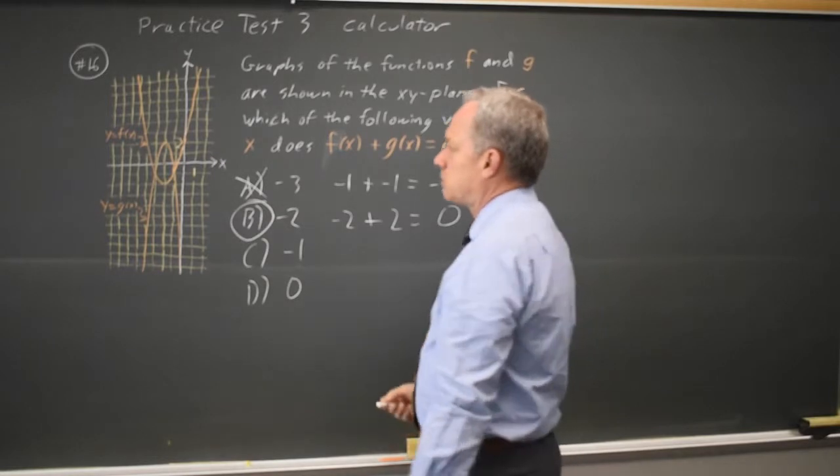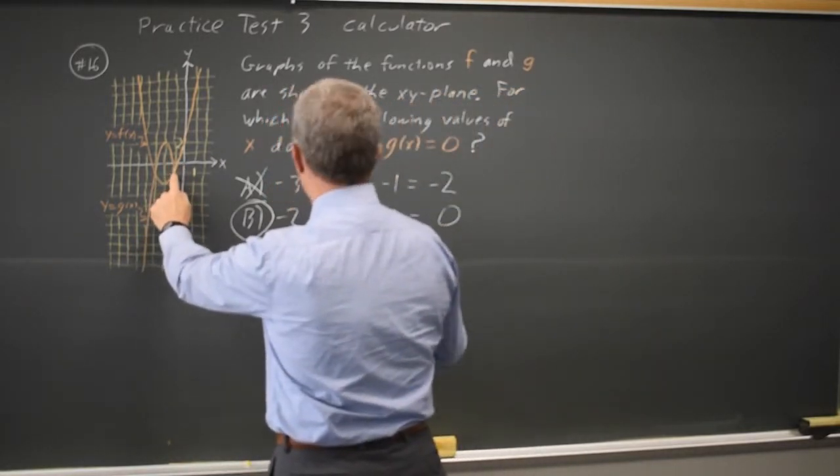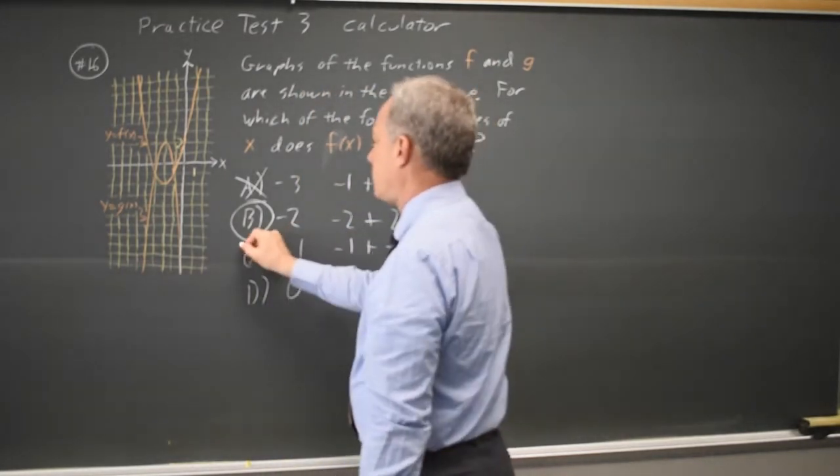If I want to check the other two just to go over this again, for x equals negative 1, f of x and g of x are equal again. They're both negative 1, and that adds to negative 2, which is not correct.